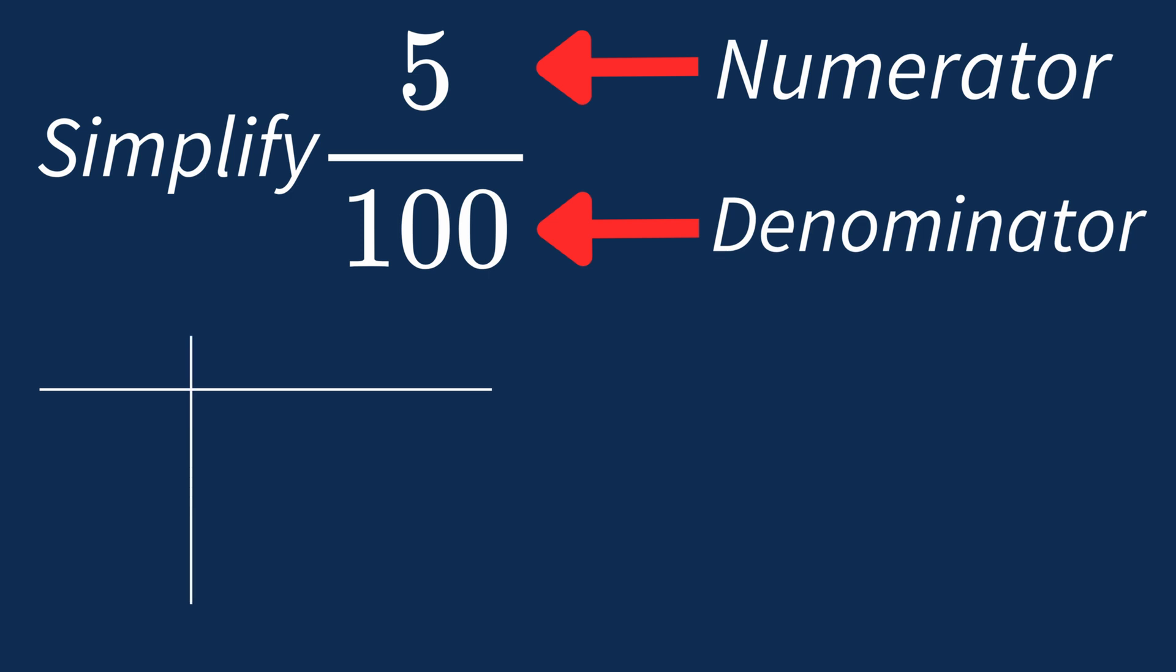First, let's list out the factors for each. For 5, the factors are 1 and 5.